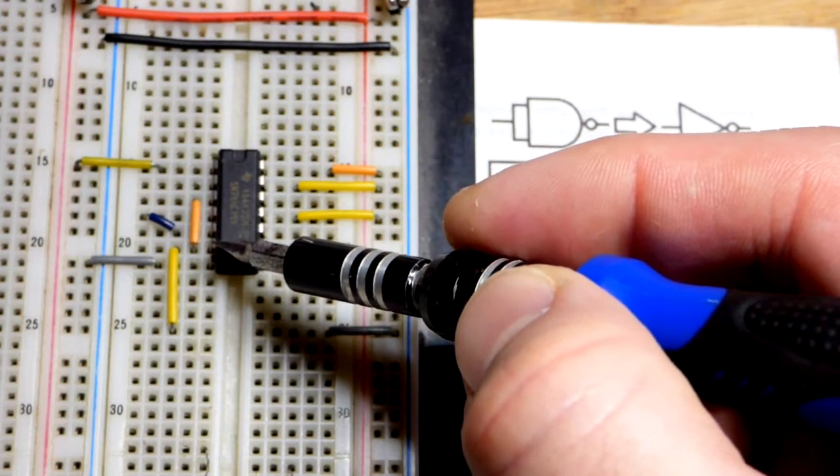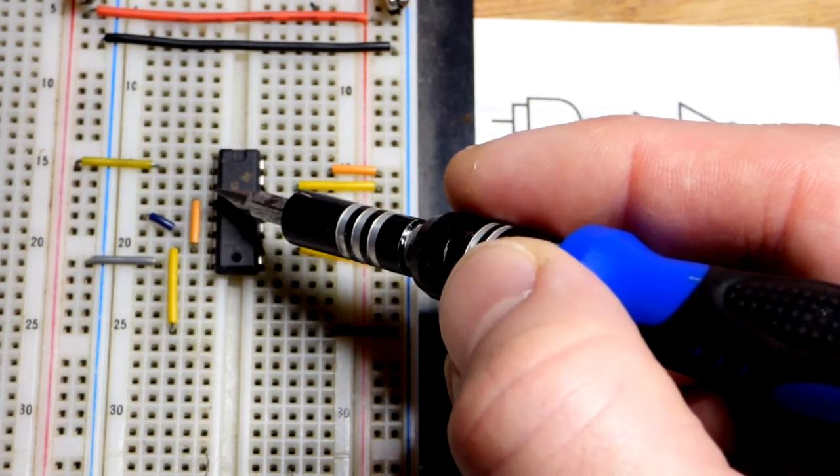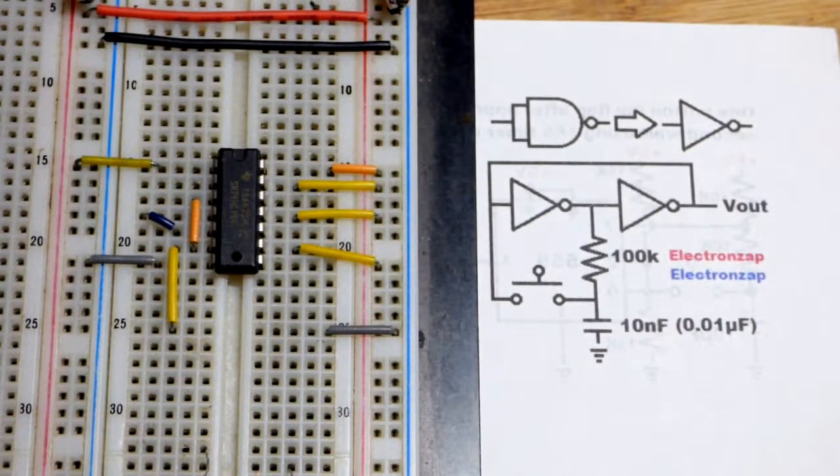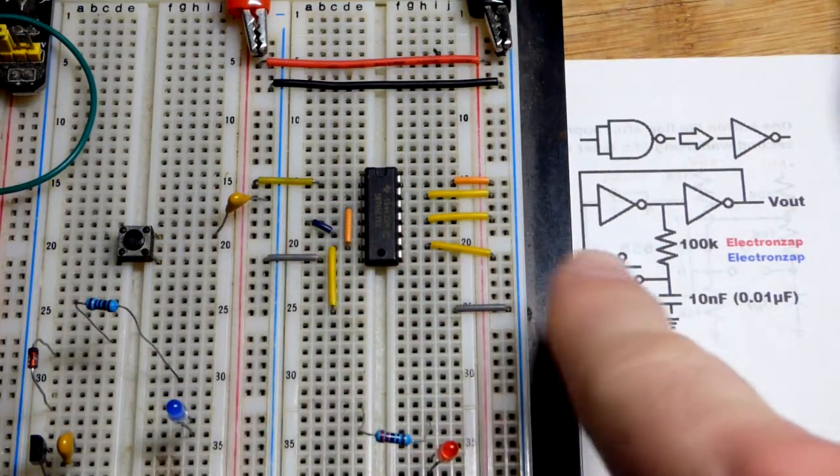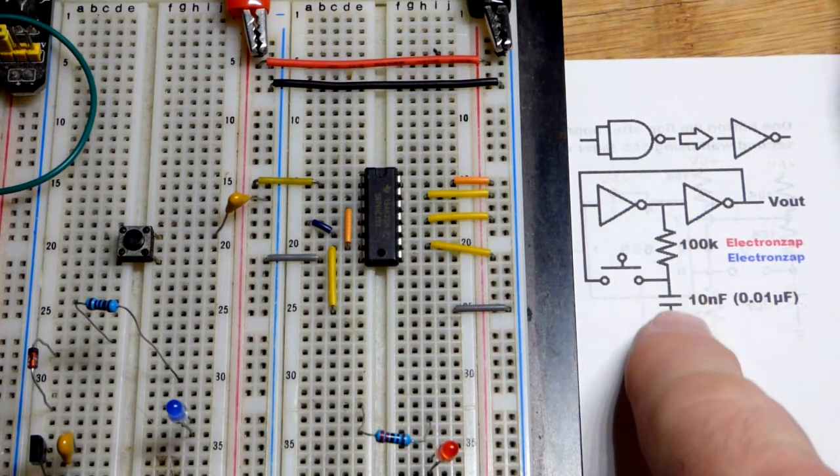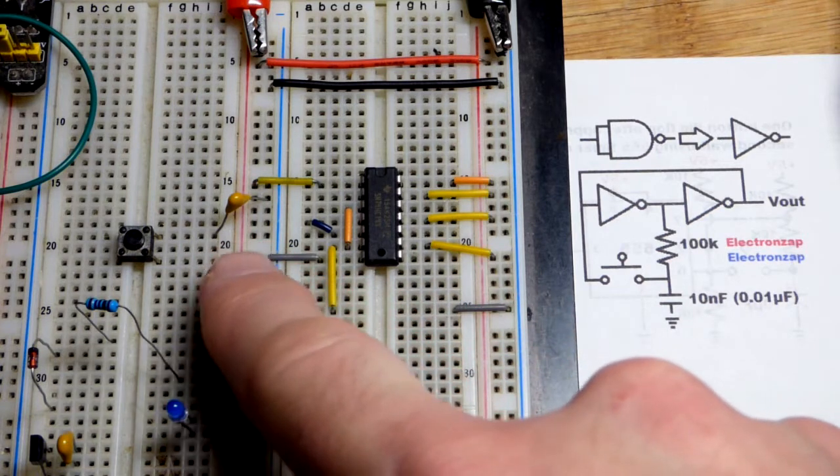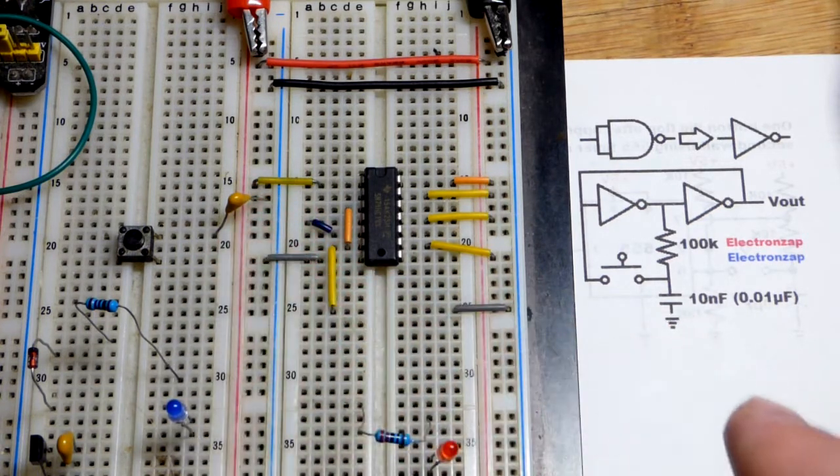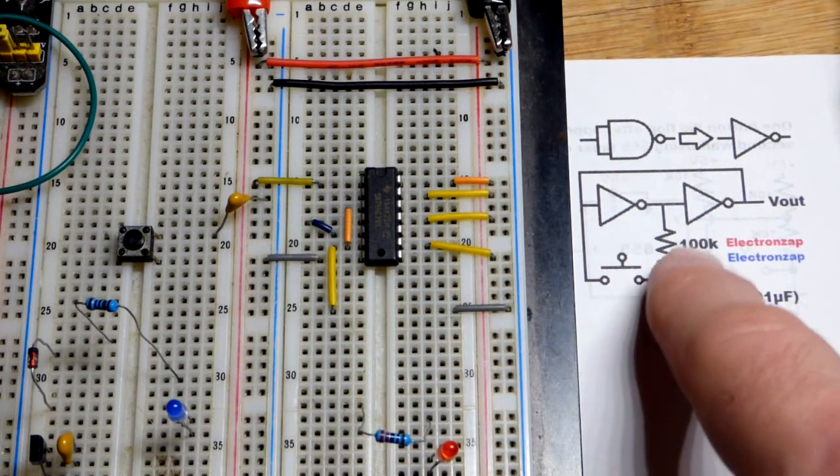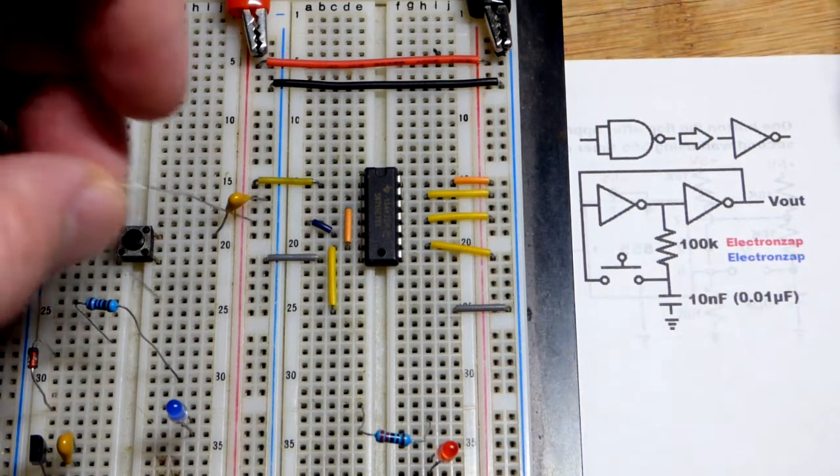We have our cycle. Now for the switch part - you can see one side of the switch has a 10 nanofarad capacitor going to ground, and then we have a 100,000 ohm resistor going where the switch and capacitor connect. It's coming to where the two inverters connect.